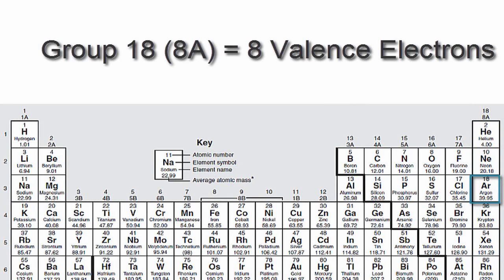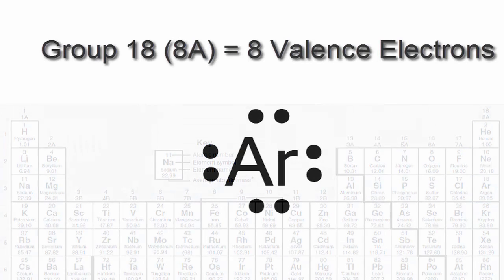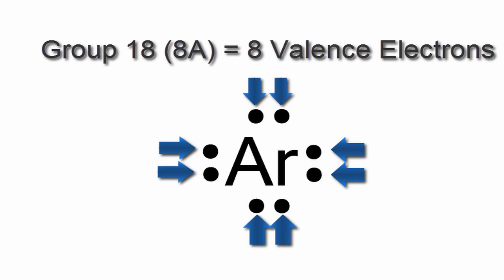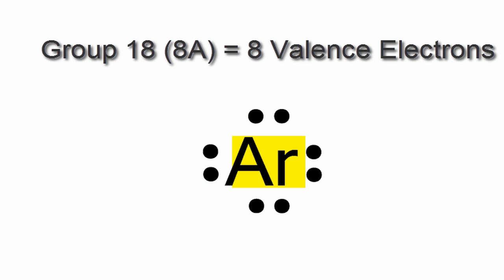Since argon is in group 18 or 8A, that means it has eight valence electrons. We put those eight valence electrons around Ar, the element symbol, and that's it. That's the Lewis dot structure for argon.